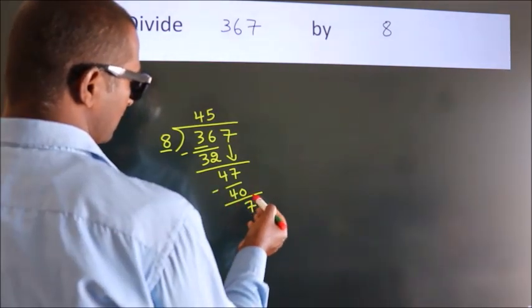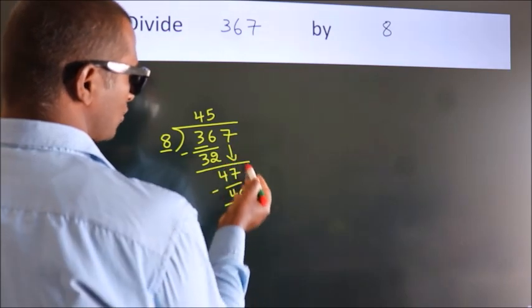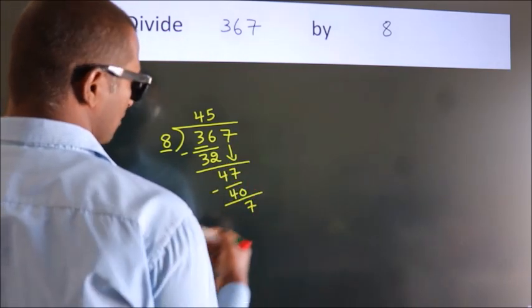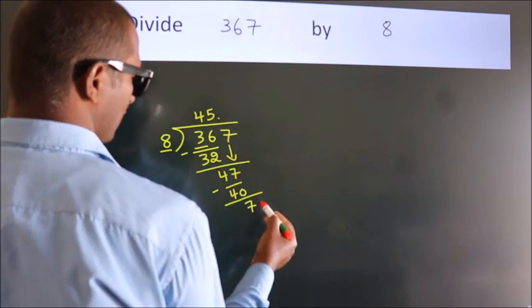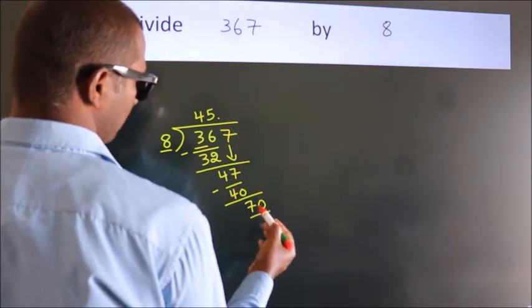After this, no more numbers to bring down. So what we do is, we put a dot and take 0. So 70.